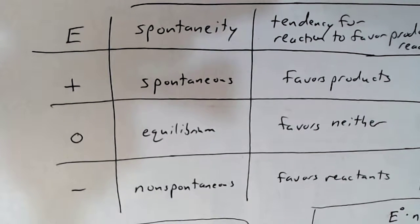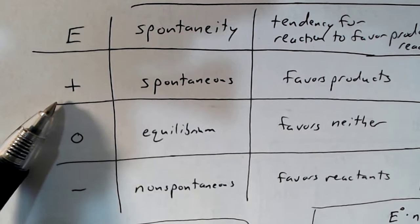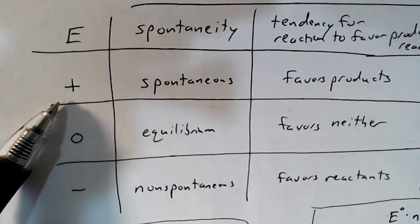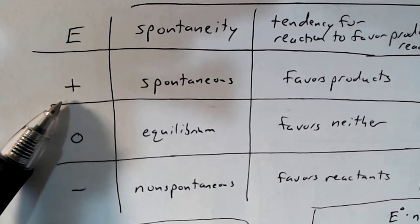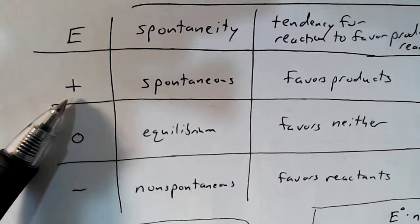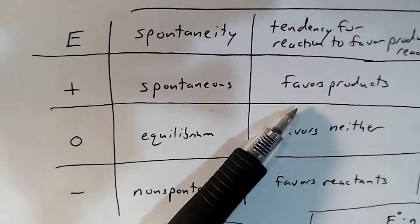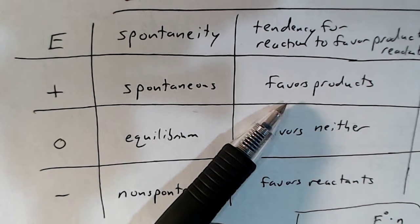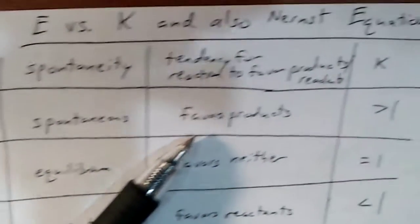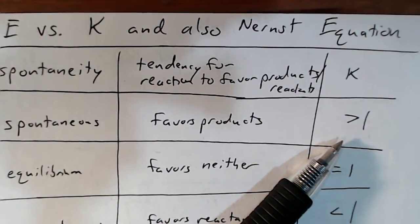We can tell a lot about a reaction by determining the voltage of the reaction. What is the electromotive force that is produced by it? If we have a positive E value for a reaction, that means that the reaction is spontaneous — it's going to favor the formation of products. When equilibrium is established, there's going to be more product than reactant, so the K value for that reaction is going to be greater than 1.